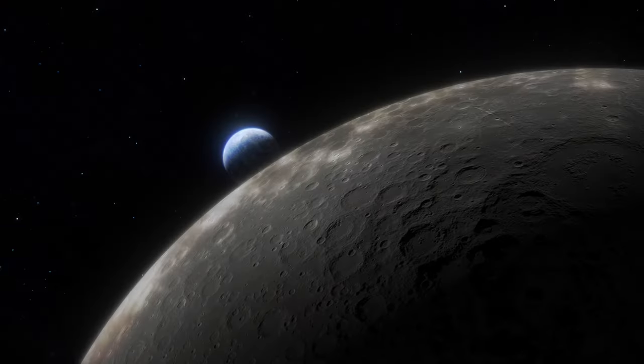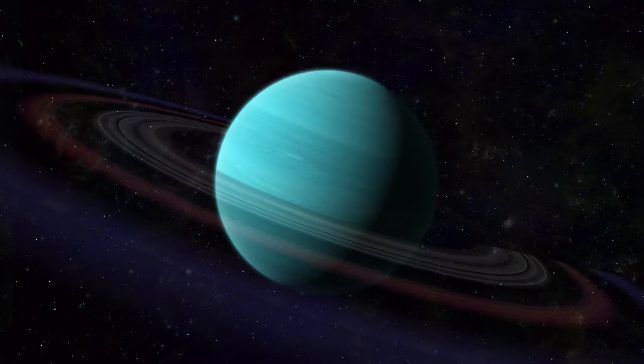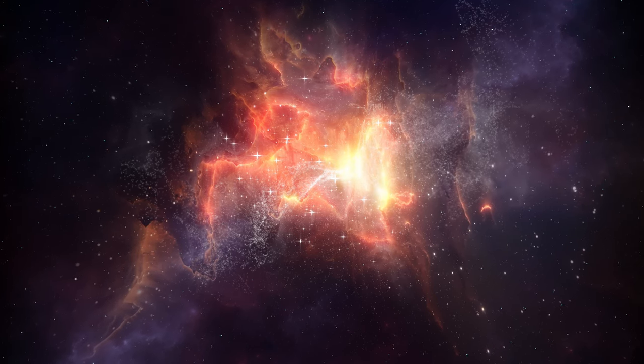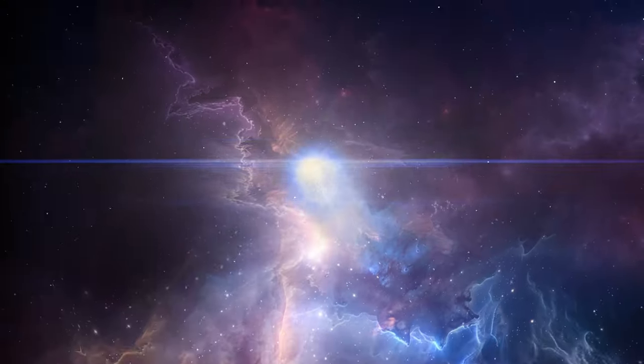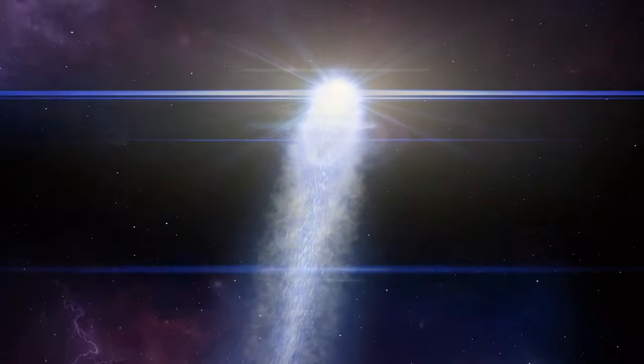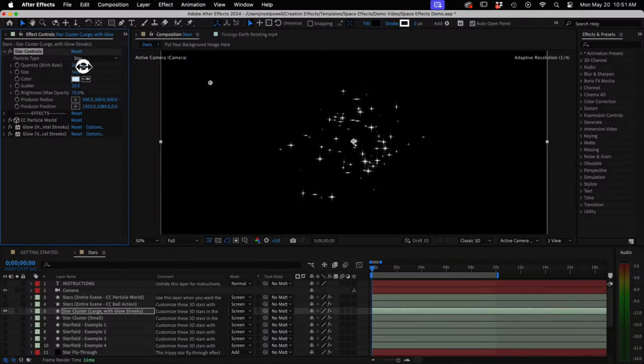And besides those, this package also includes the moon and every planet of our solar system, as well as a 3D nebula generator, a galaxy, some different options for comets or shooting stars, and a bunch of options for generating 3D stars.